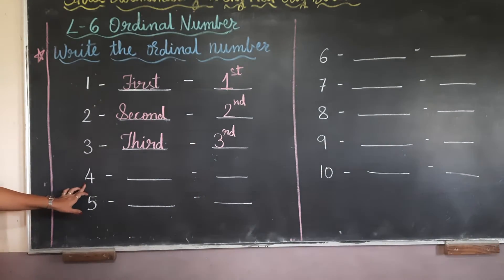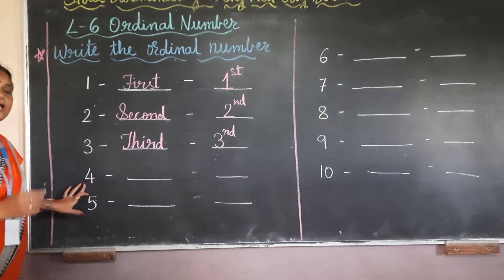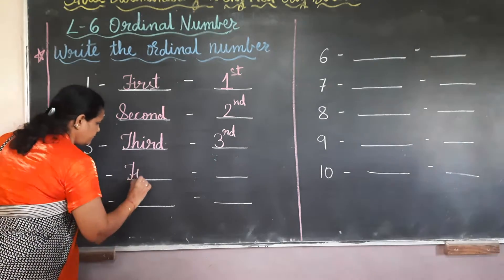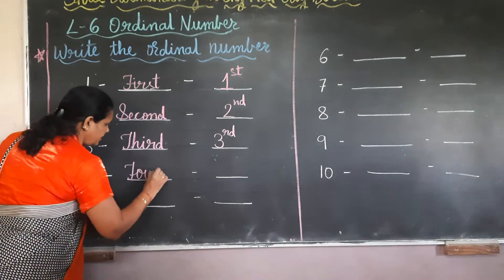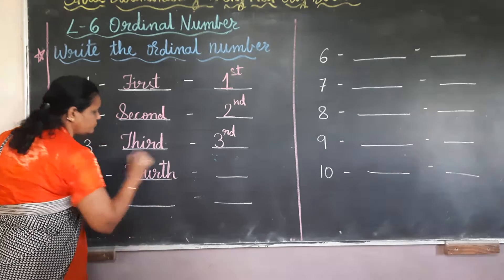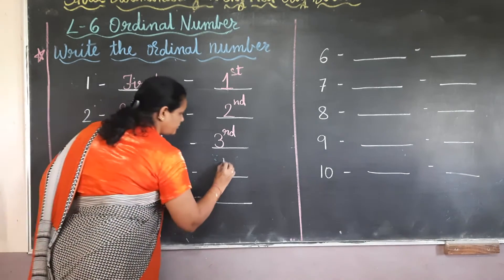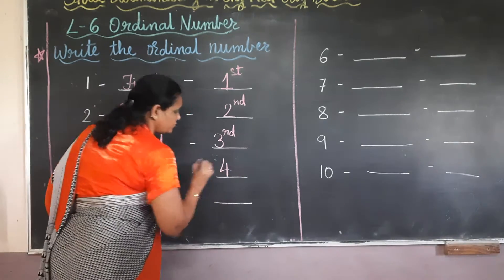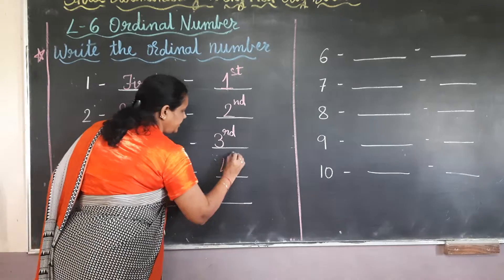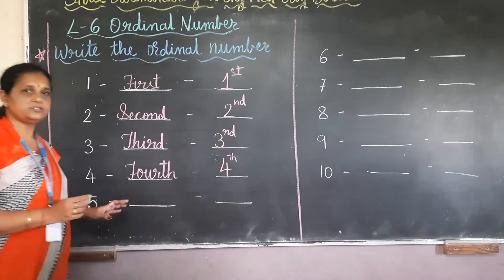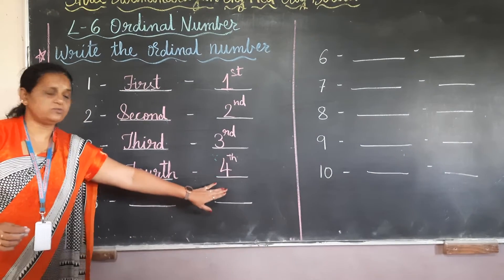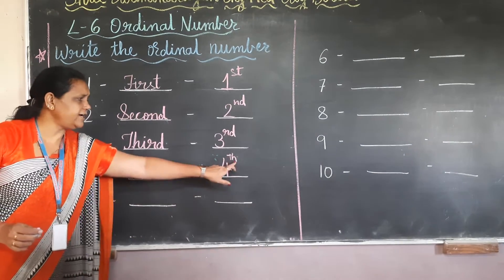For 4th, I got the 4th position. The spelling is F, O, U, R, T, H — fourth. And in the short form, we write 4 and TH — 4th.